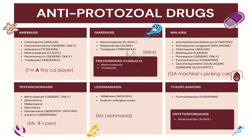For trypanosomiasis, the drugs are benznidazole, eflornithine, melarsoprol, nifurtimox, pentamidine, and suramin. The mnemonic is 'Miss B's Pen' — M is for melarsoprol, S is for suramin, B is for benznidazole, P is for pentamidine, E is for eflornithine, and N is for nifurtimox.